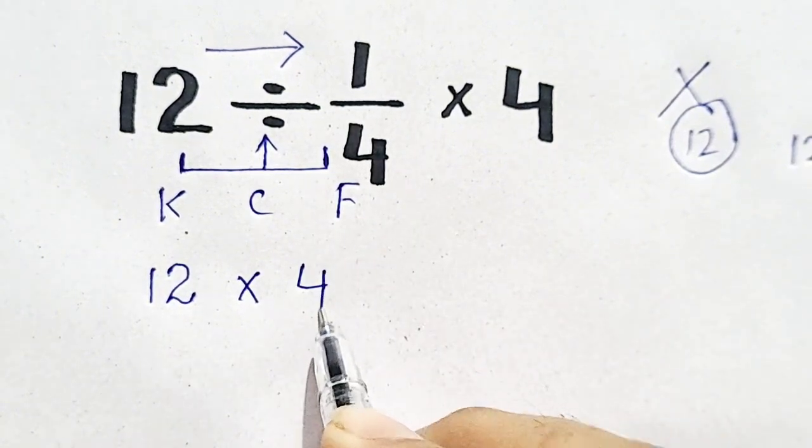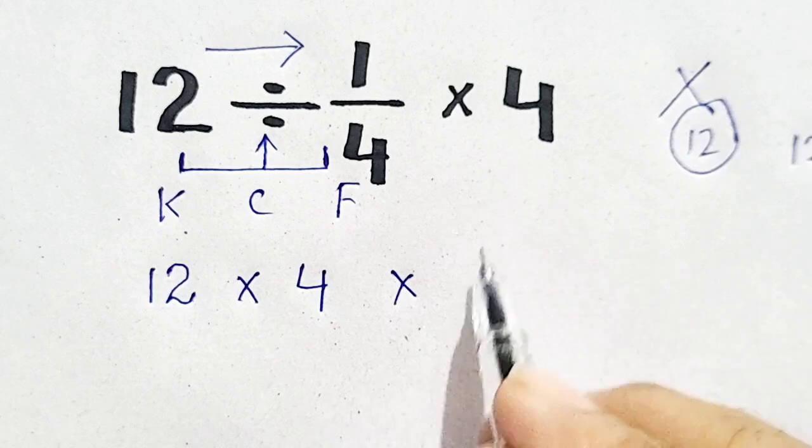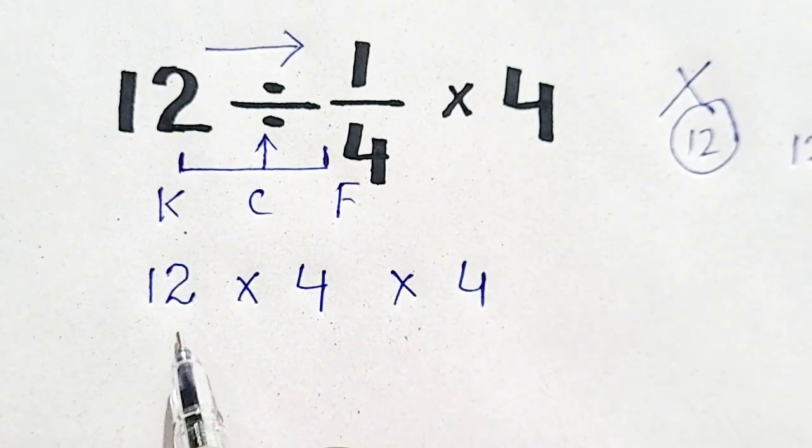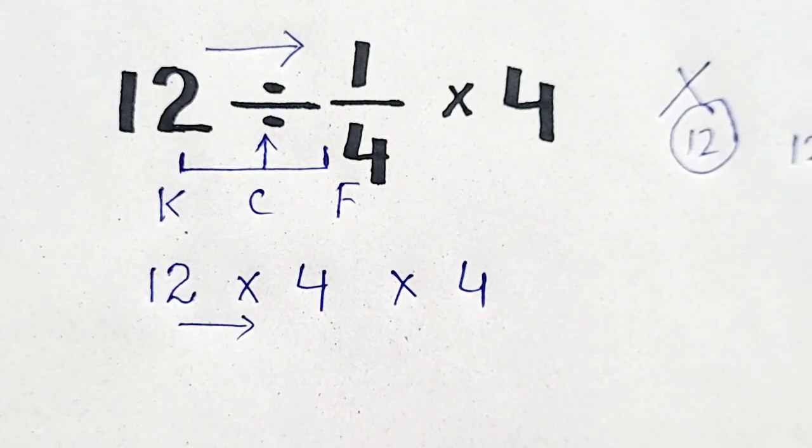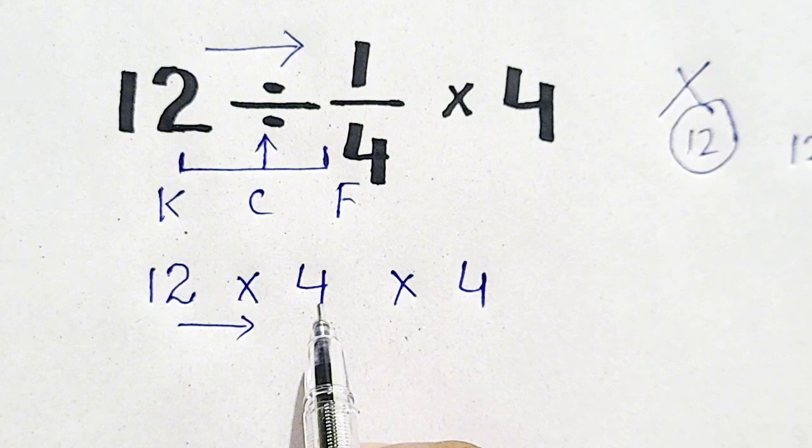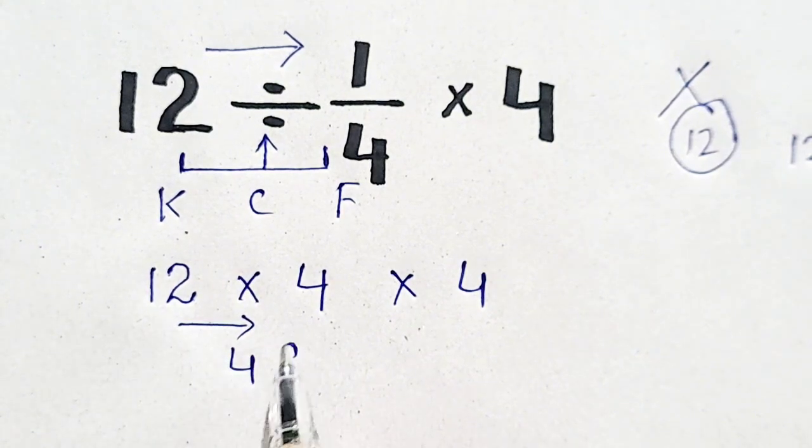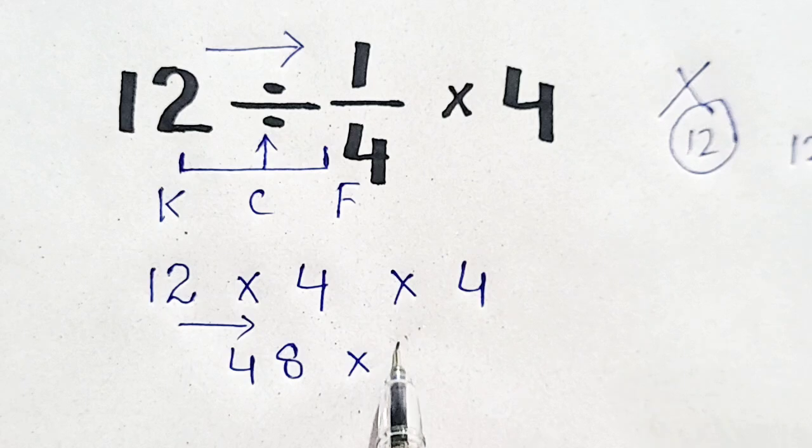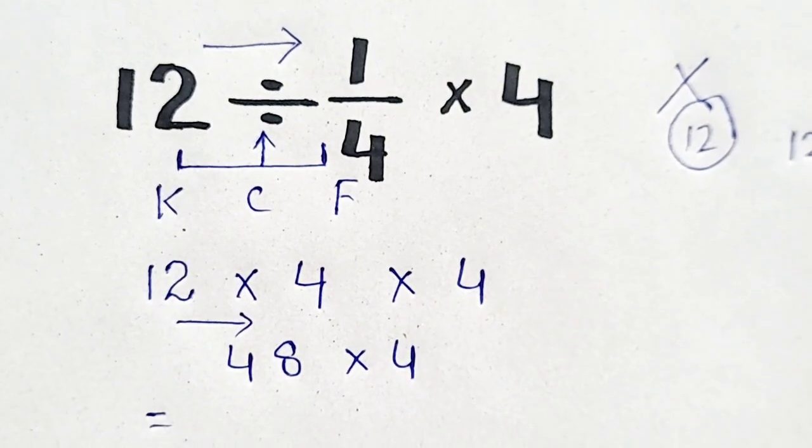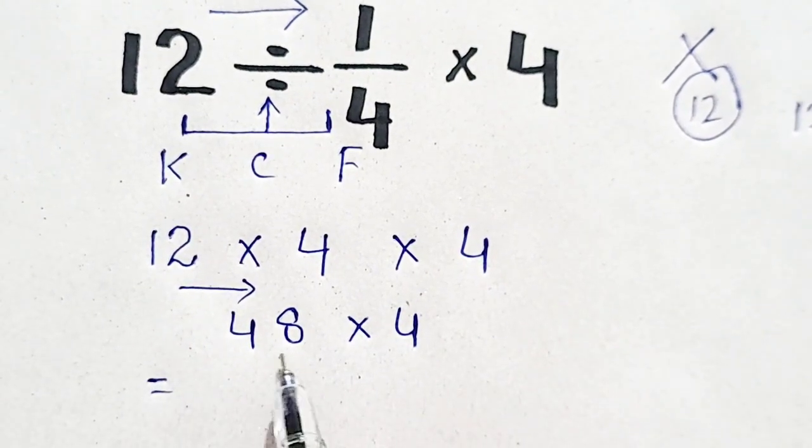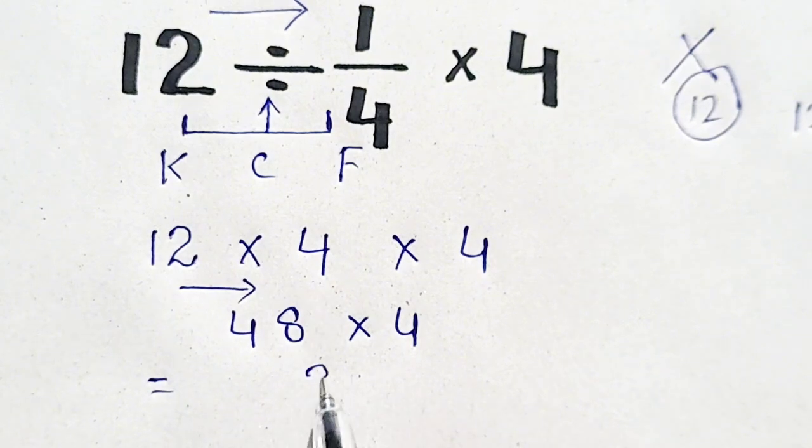It will become 4 times 4. Now again, we have to move from left to right. 12 times 4 will be 48 times 4. So 48 times 4 will be equal to 192.